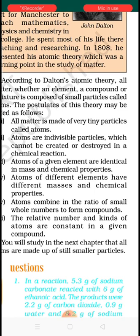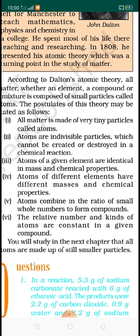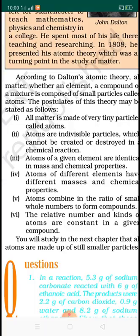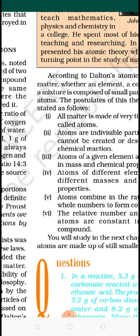Atoms combine in the ratio of small whole numbers to form a compound. The relative number and kind of atoms are constant in a given compound. So points 5 and 6 show the law of constant composition or law of constant proportion. This Dalton's atomic theory is based on law of conservation of mass and law of constant proportion.